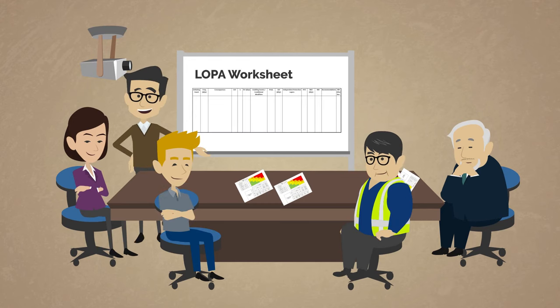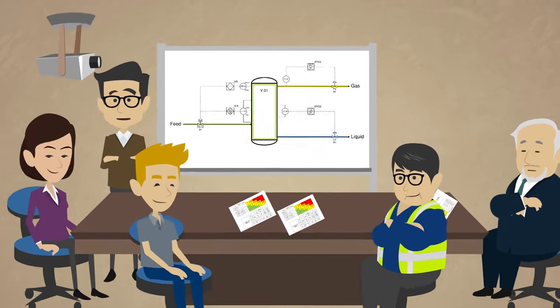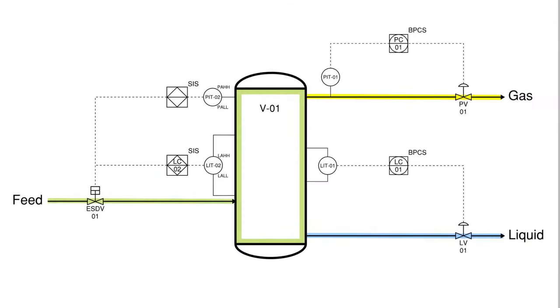Let's jump in with our HAZOP team as they conduct a LOPA to identify how they would determine the reliability of the SIF required for the vessel V-1 we have been looking at. Alright, we have identified that the level control valve LV-1 failing closed would cause liquid to carry over from the separator V-1 to the compressor downstream.